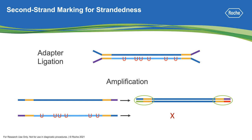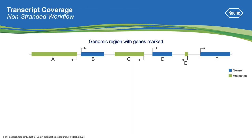To demonstrate the benefits of stranded information, we'll show how it helps with transcript coverage analysis. Here we have a section of a genomic region, and in that region we have some genes that are either on the sense strand — the blue genes — or the anti-sense strand — the green genes. Arrows indicate transcription start sites of each gene and additionally which strand the gene is on.